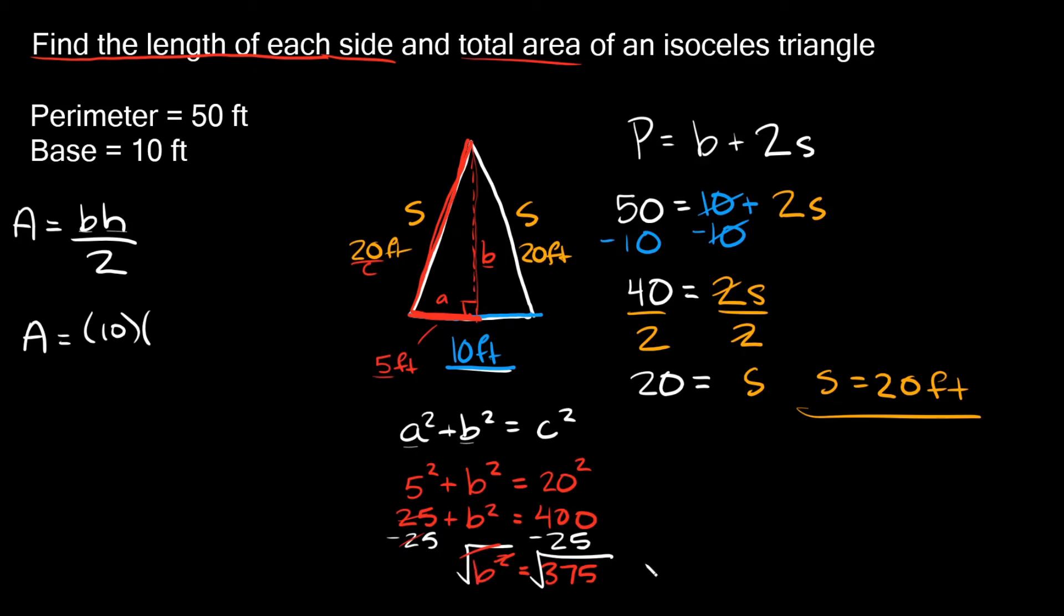So then on this side, we're just left with B, and that's equal to the square root of 375, which I'm just going to round in this case. We'll put that as 19.4. So remember B was the height, the height right here. So we're going to say that the height is approximately 19.4 feet.